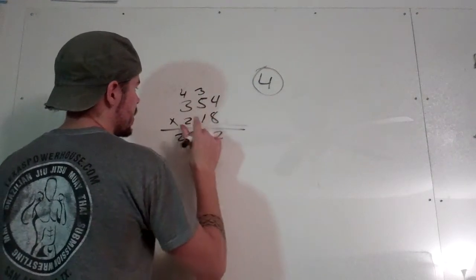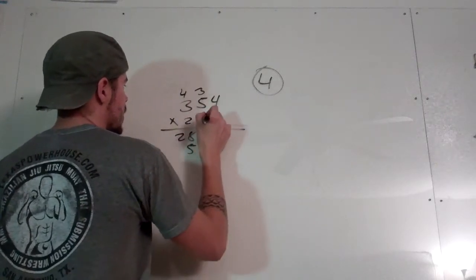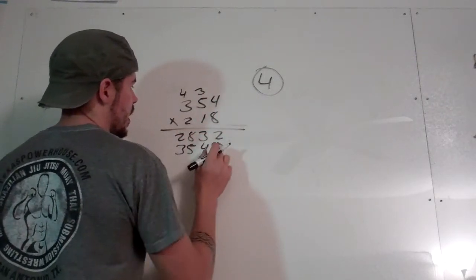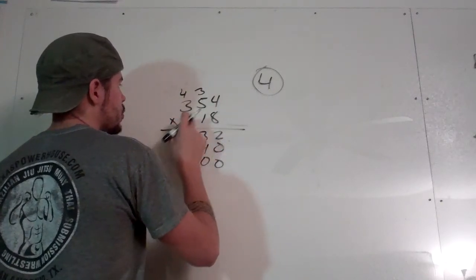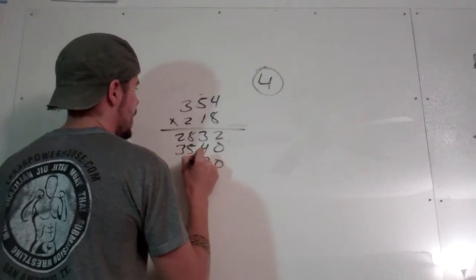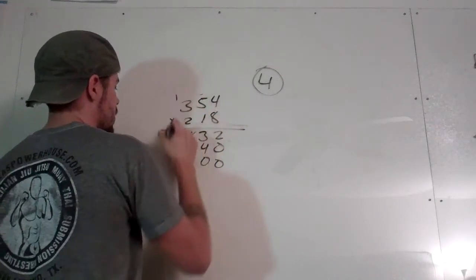Don't forget to add your zero here when we move to the next number. So 0, 1 times 4 is 4, 1 times 5 is 5, 1 times 3 is 3. And then I'm going to the next number now, so 0, 0. And 2 times 4 is 8, 2 times 5 is 10, 2 times 3 is 6, plus 1 is 7.